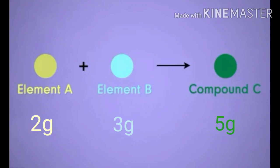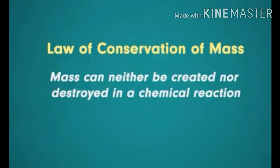They both react together and form element C of 5 grams. We also see that when element A and element B are added together they add up to 5 grams and compound C is also of 5 grams, which means that mass can neither be created nor destroyed in a chemical reaction. This is the first law, law of conservation of mass.